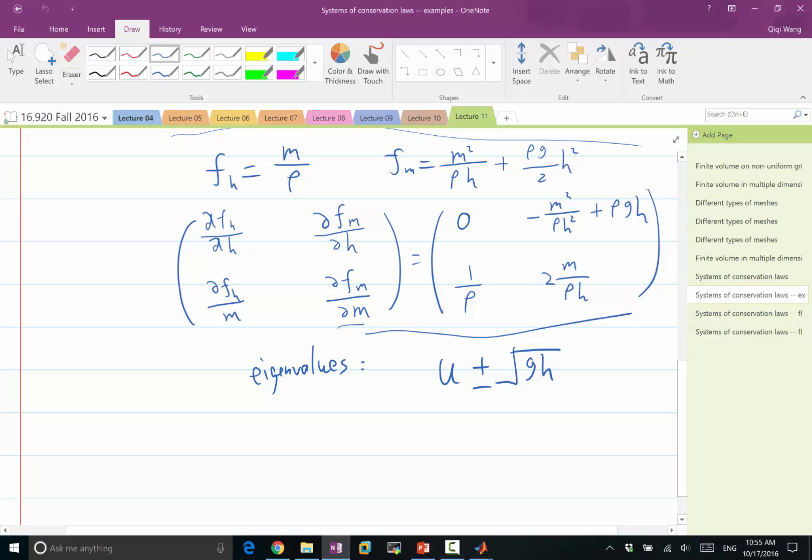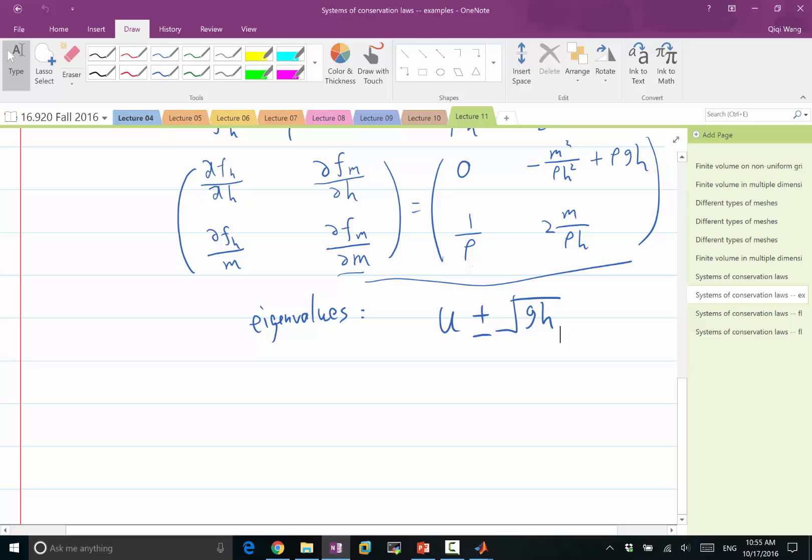So that tells us something interesting. So the waves in this shallow water equation, of course it changes as the local velocity changes. So if U is positive, both waves tend to go towards the right. If U is negative, both waves tend to go towards the left. But then there are two waves, so this is U and this is U plus square root of GH and this is U minus square root of GH.